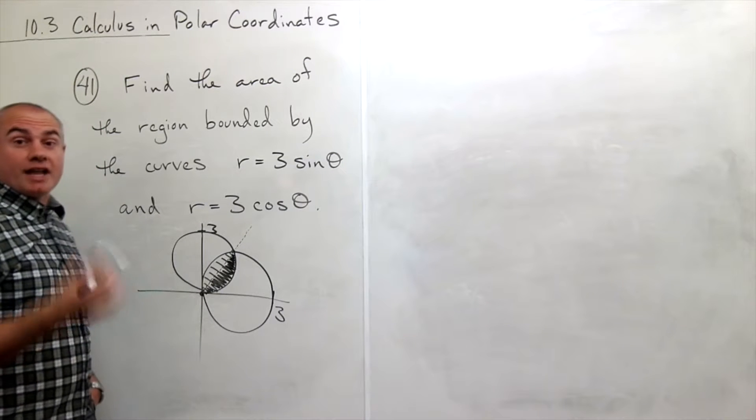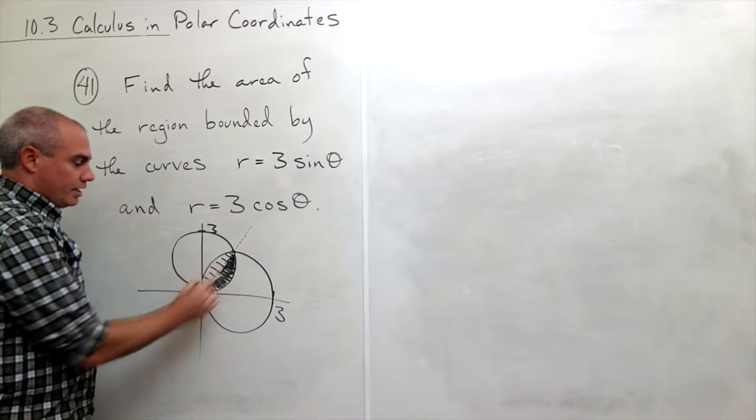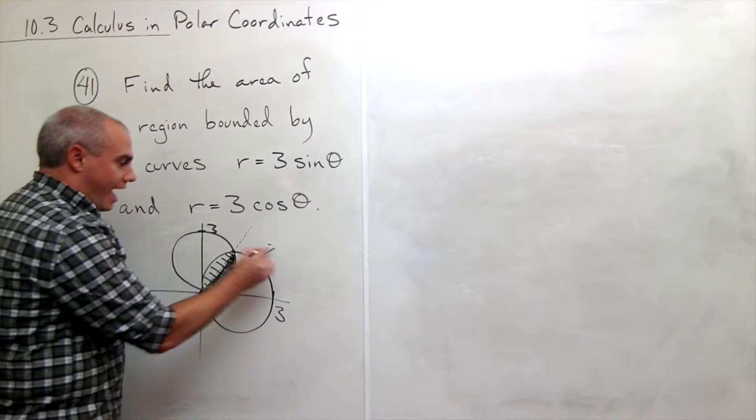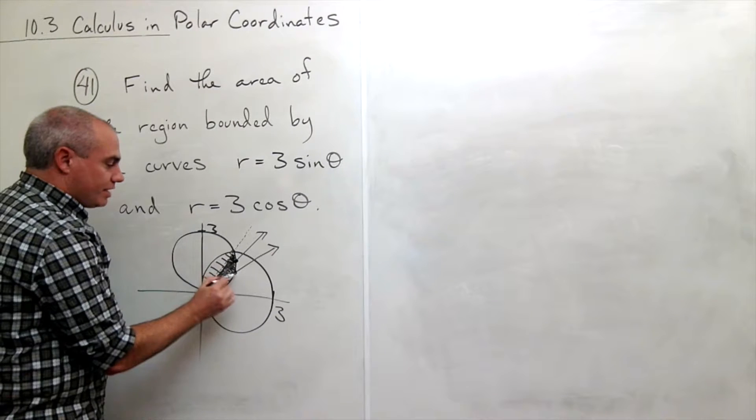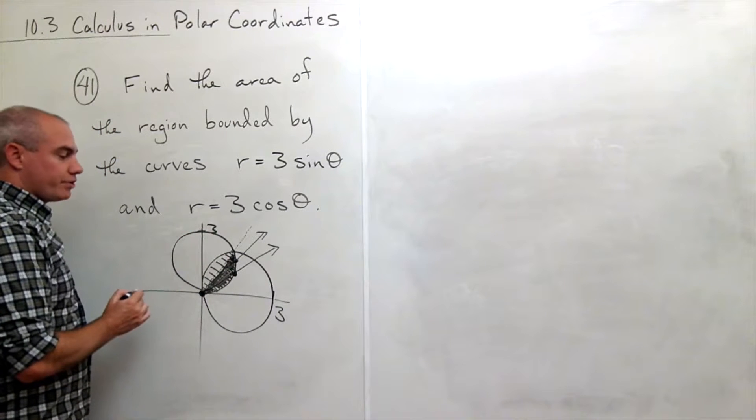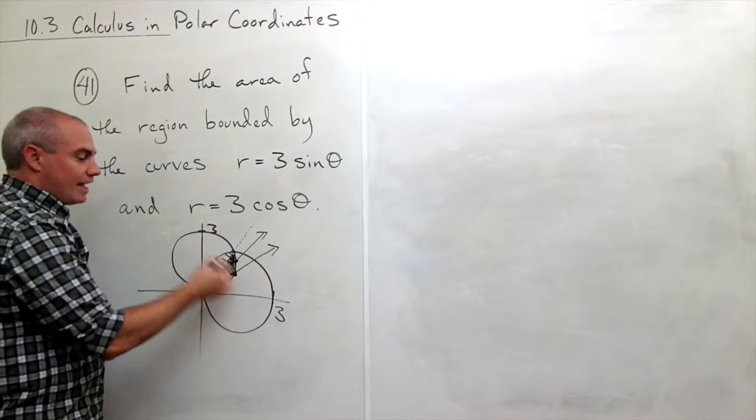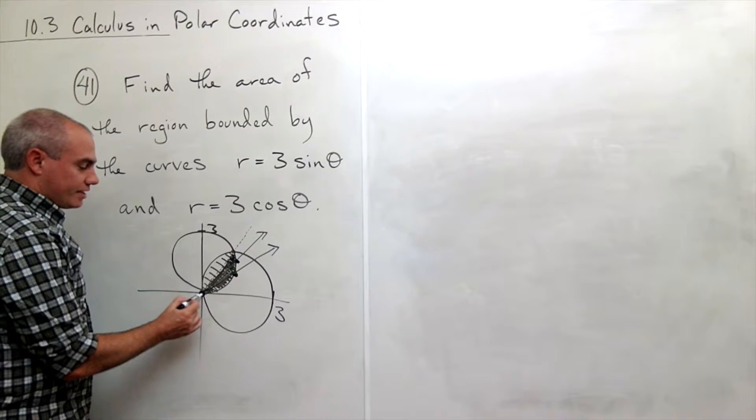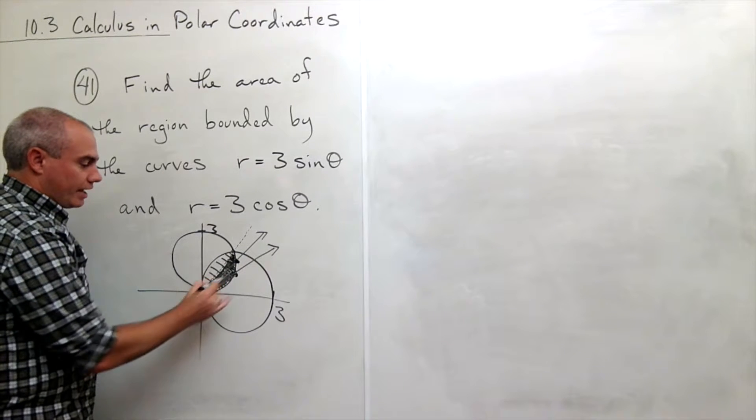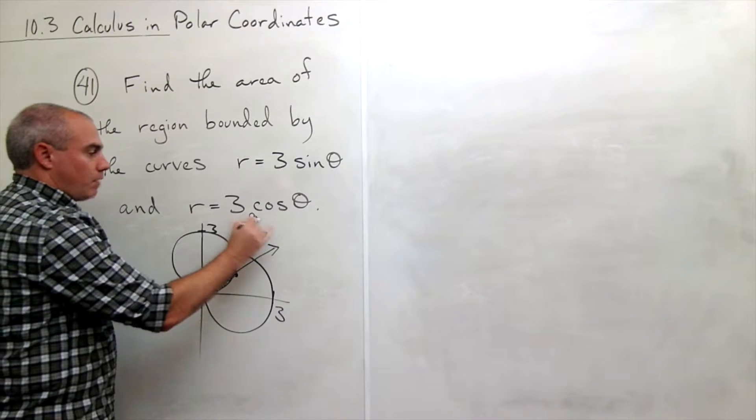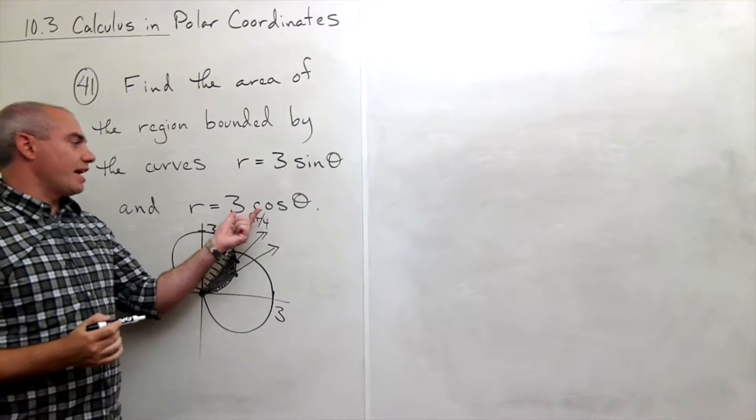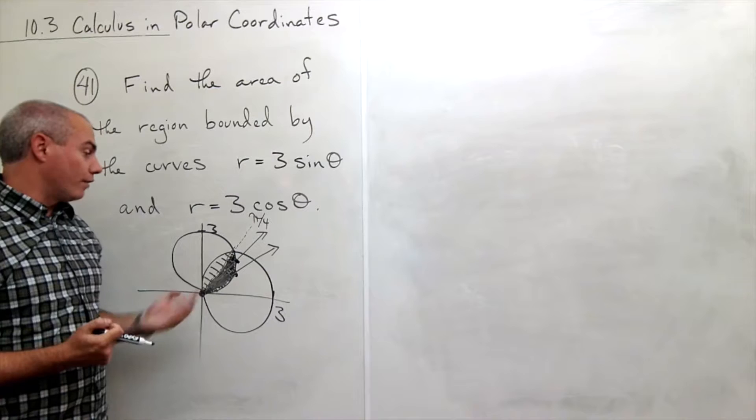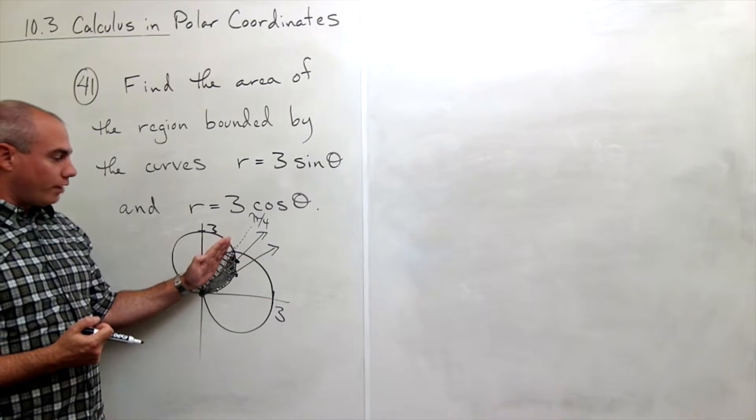And the reason that I only want to find the area of the bottom half down here is because if I'm starting at the origin and I draw a ray out anywhere on that region, all I'm dealing with is the curve r equals 3 sine of theta. The r equals 3 cosine of theta, it doesn't matter at all. I'm just dealing with the first curve. So I can integrate this. This starts at zero and I keep integrating until I get to exactly pi over 4. If that's not clear, set 3 cosine theta equal to 3 sine theta. And you get that theta would have to be equal to pi over 4. So I'm going to integrate this thing from zero to pi over 4 and then double it.